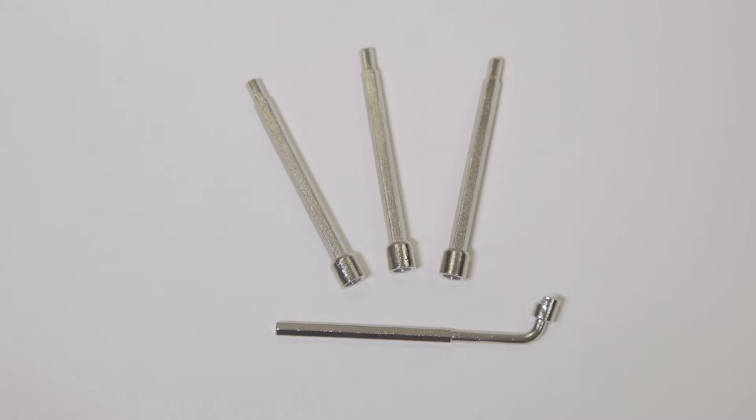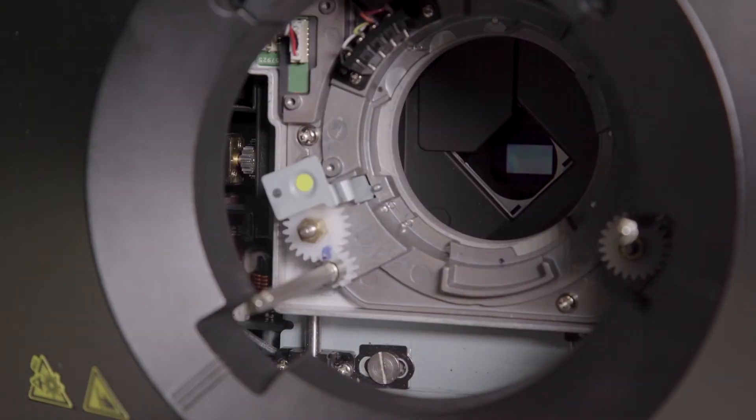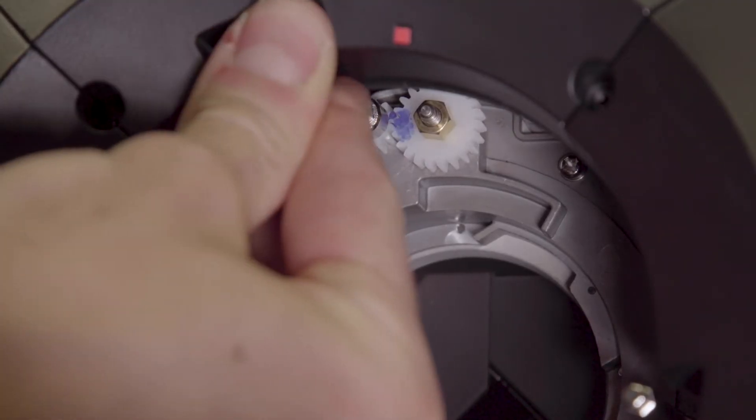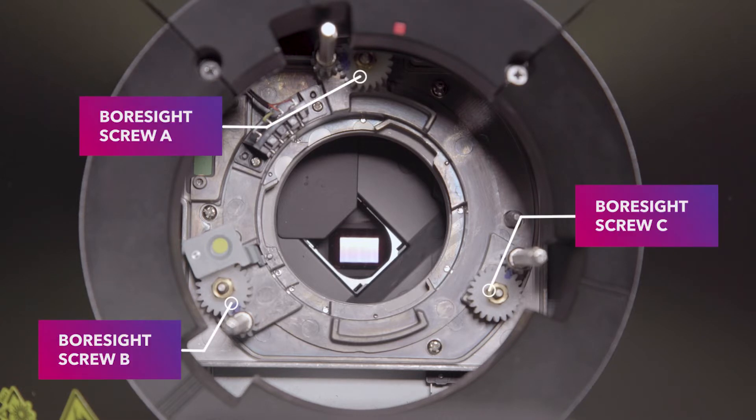The three borsite extension rods must be installed before inserting the new UST lens. Before installing the UST lens we recommend initially adjusting the borsite screws. Locate the three borsite screws labeled here as A, B and C.